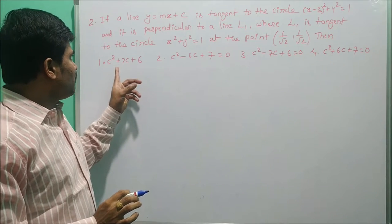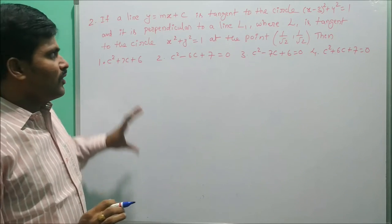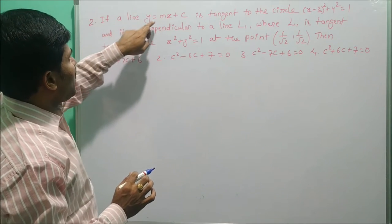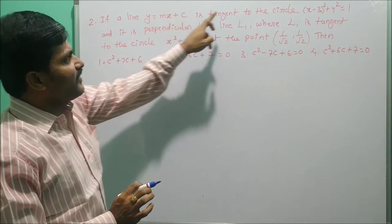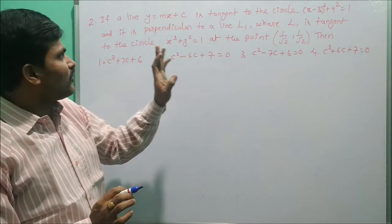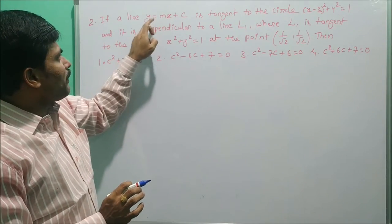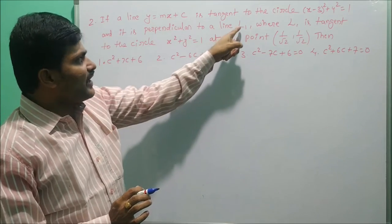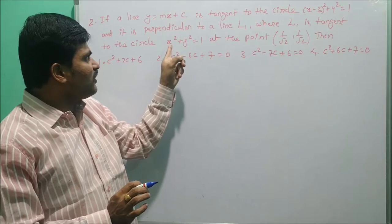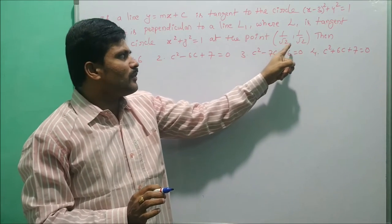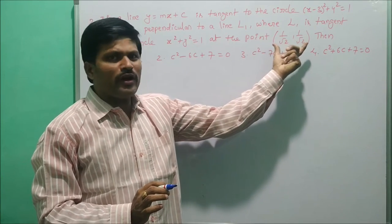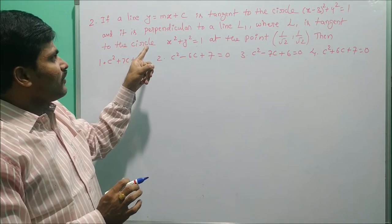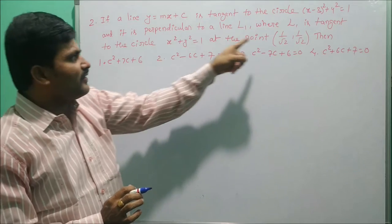Here we need to find the relation in c. Given that L1 is tangent to the circle x² + y² = 1 at the point (1/√2, 1/√2), this is the point of contact. First of all, we find the line L1 — the tangent equation to this circle at this point.